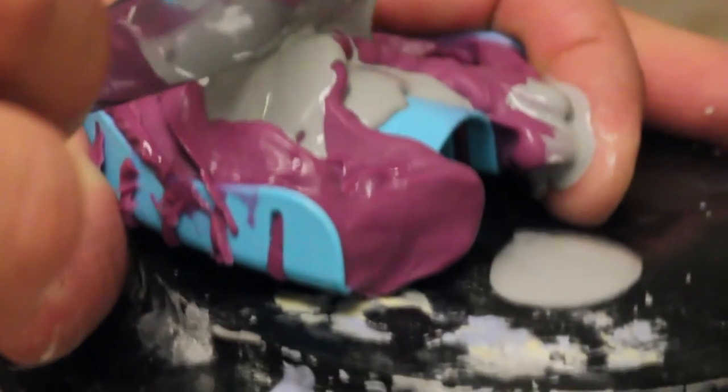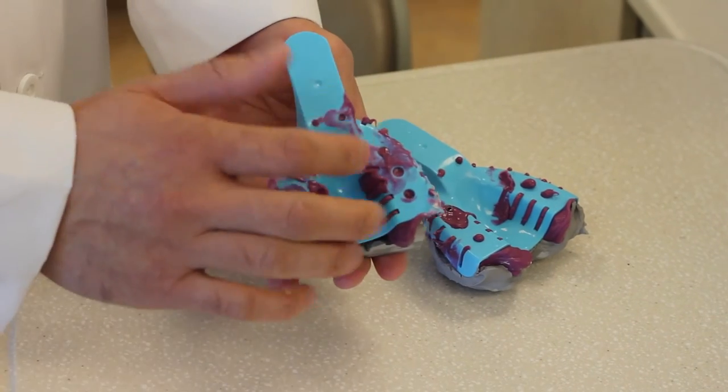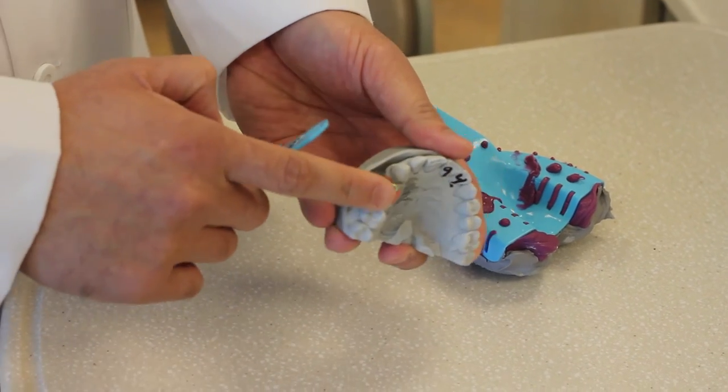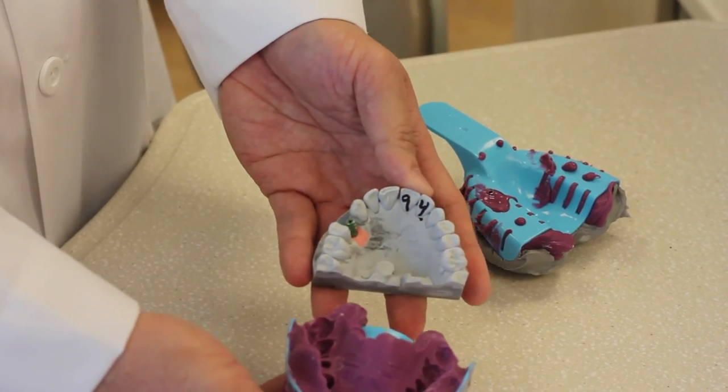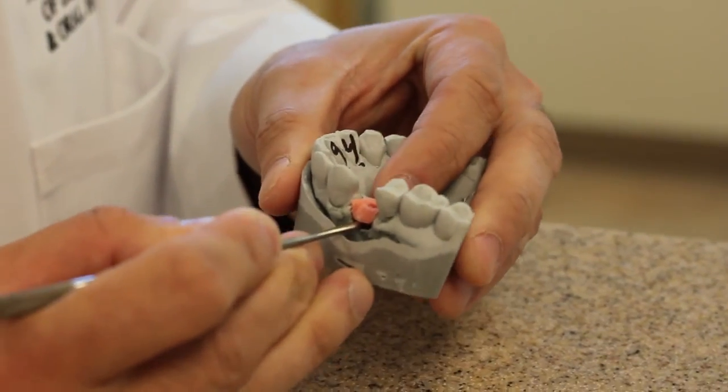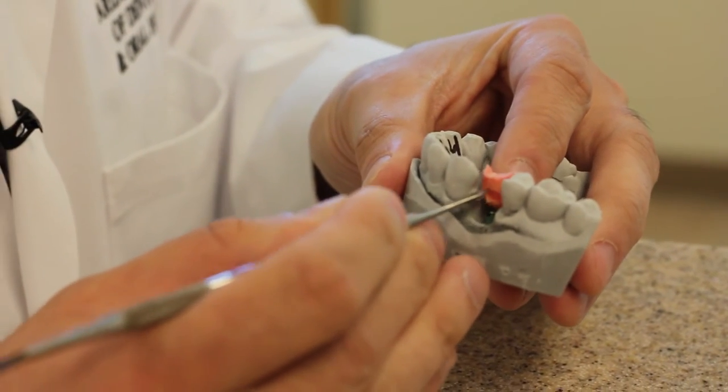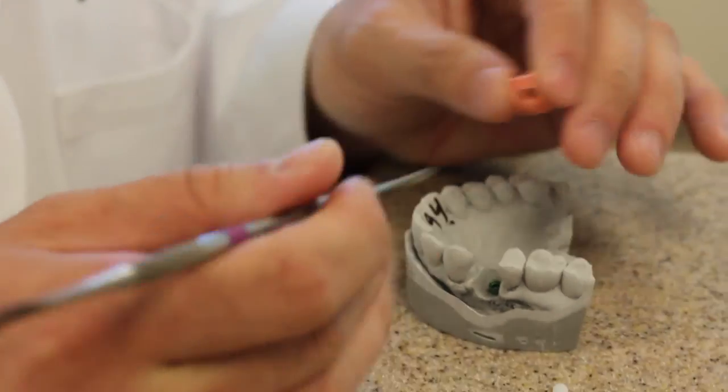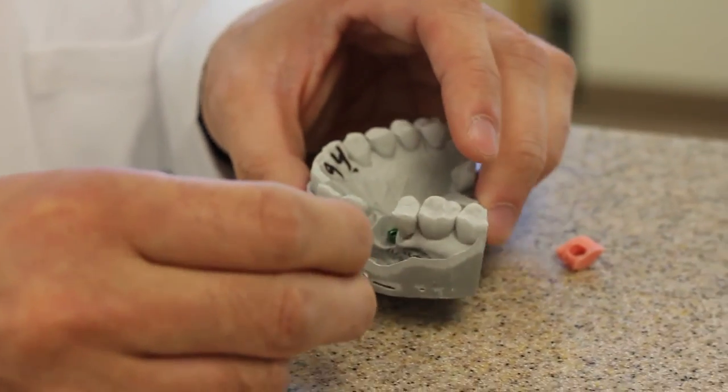At this point, you're going to pour the impression with Dyson, just like any other impression. It's important to have the impression analog and coping firmly in the impression with enough materials surrounding it so it's not vibrating a lot during the pour. Once the stone is set, you'll be able to separate it. You can see the soft tissue moulage that's embedded into the stone cast. The soft tissue acts to simulate the soft tissue contours, and it's important to be able to remove it so that we can confirm the seat of any components that go onto the implant.